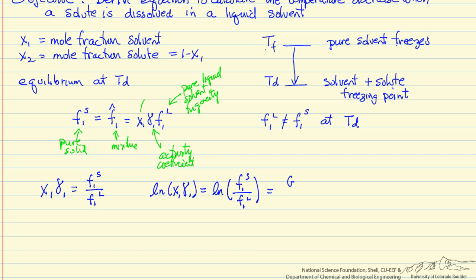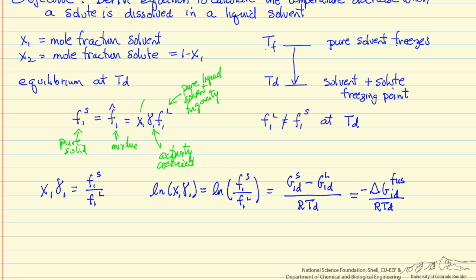The log of the fugacity ratio gives us the Gibbs free energy of the pure solid component 1 at temperature Td minus the Gibbs free energy of the pure liquid component 1 at temperature Td, divided by R times Td. This can be written as minus delta G of fusion for component 1 at temperature Td over R·Td. So we need to calculate delta G of fusion in terms of delta H and delta S.